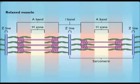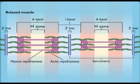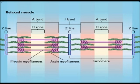In a relaxed muscle, actin and myosin myofilaments lie side by side, and the H-zones and I-band are at maximum width.